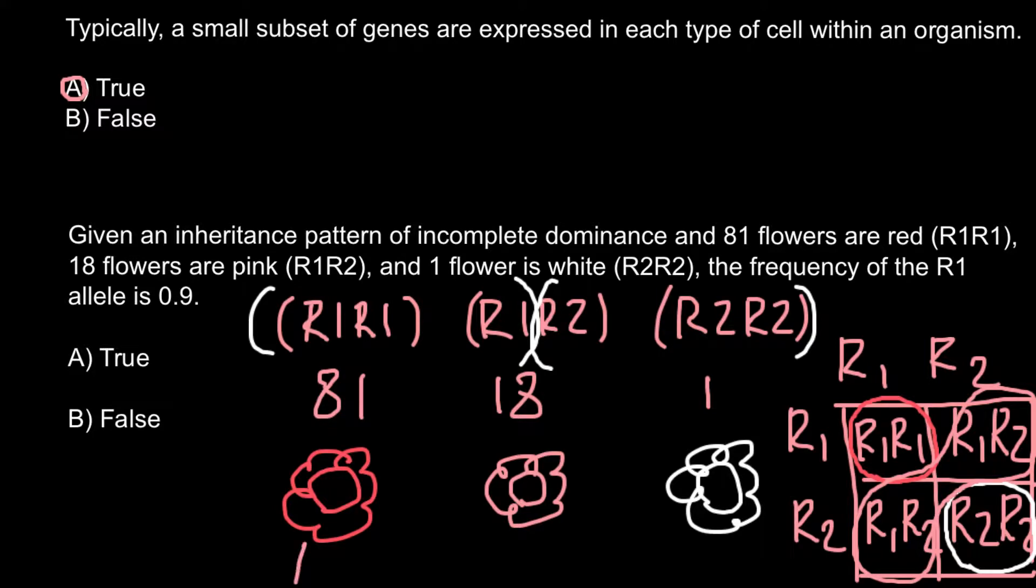We multiply 81 by 2, so the total number of R1 alleles is 162. We have 18 pink plants, and each plant has one R1 allele and one R2 allele. So 18 plants means 18 R1 alleles plus 18 R2 alleles.